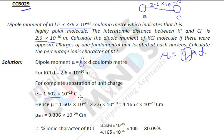The distance d is 2.6 × 10⁻¹⁰ meter. So we substitute this: e = 1.6 × 10⁻¹⁹, and mu we will get as 4.165 × 10⁻²⁹.